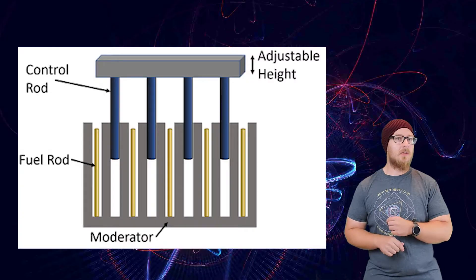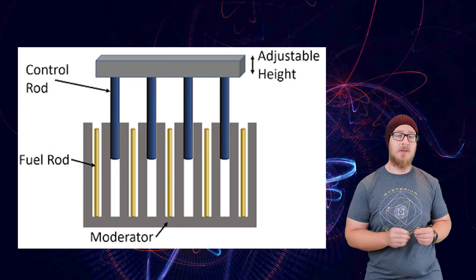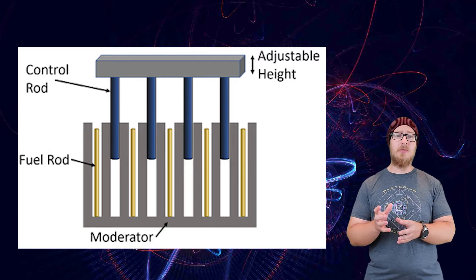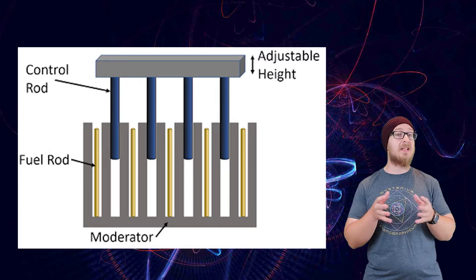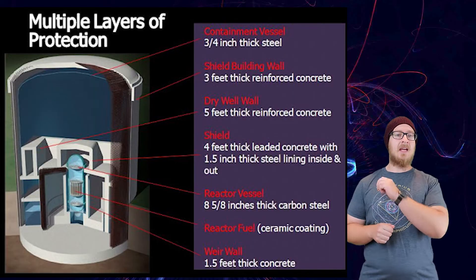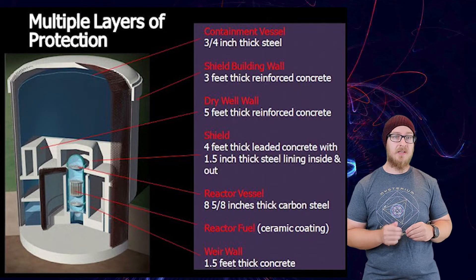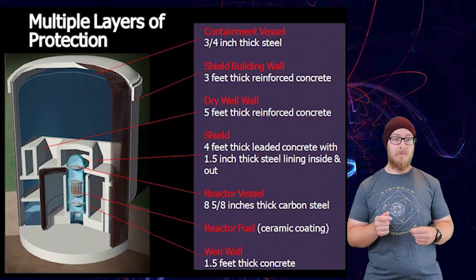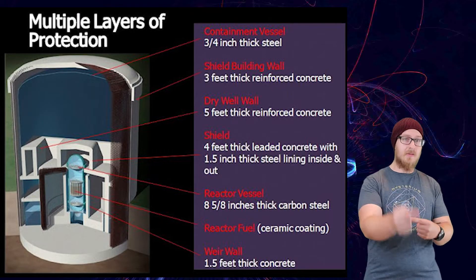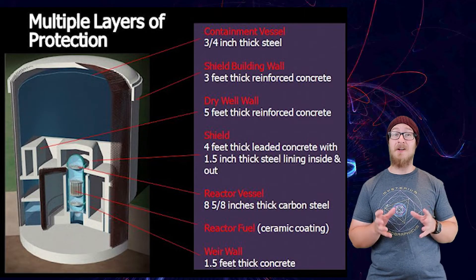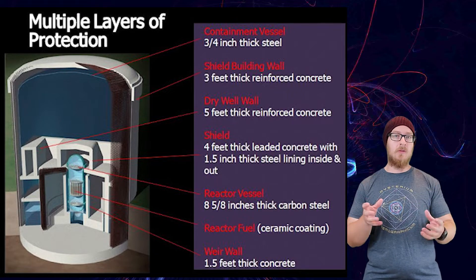In a nuclear reactor, there are three main components: the fuel rods, which contain the uranium; the control rods, which contain materials that can absorb excess neutrons to slow down and control the rate of a nuclear chain reaction; and the containment building, which has multiple redundancies for safety in case a reaction goes out of control. The vessel itself is nine inches of steel, then three to seven feet of concrete, then another two inches of steel, followed by three to four feet of steel-reinforced concrete. It is very difficult for anything to escape a nuclear reactor.